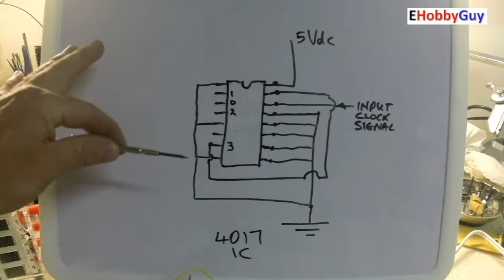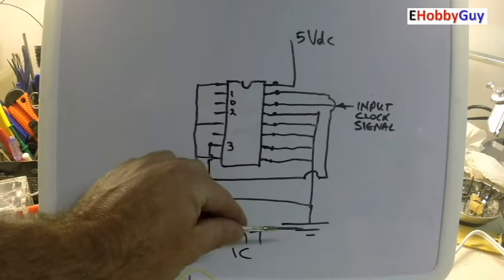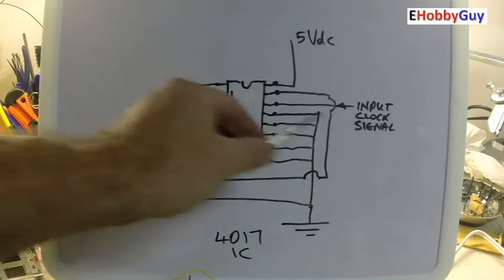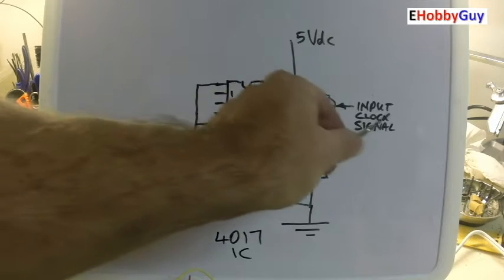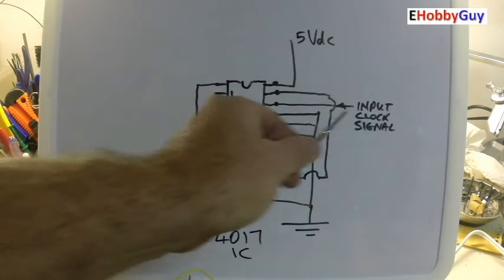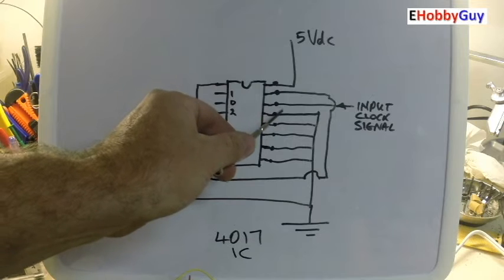Every pin that's not being used is tied to ground. Right now the input clock signal at pin 14 is coming from the astable circuit. That gets tied in here.